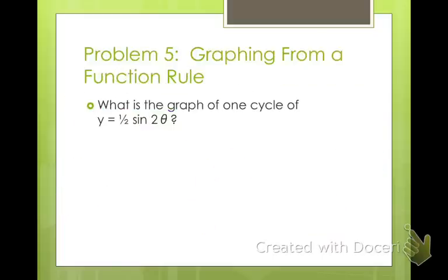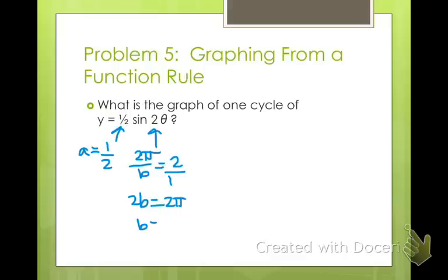Now we're going to work the opposite way. I'm going to give you an equation and I want you to make a graph. So here's my equation, y equals 1 half sine 2 theta. So the first thing I'm going to do is I need to find my values of a and b. So a is my amplitude. That's 1 half. So that means I'm going to go up 1 half of a unit and down 1 half of a unit. And I also have to find my period. So in order to do that, I need to take my 2 pi over b and set that equal to 2. So 2b equals 2 pi. So b equals pi.